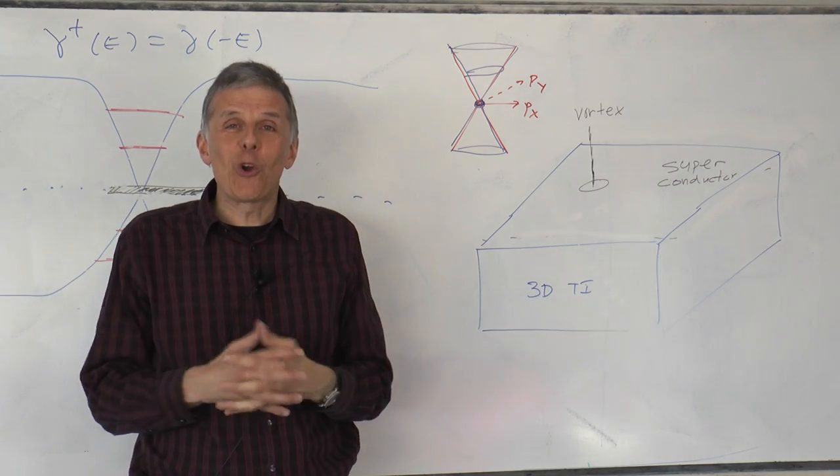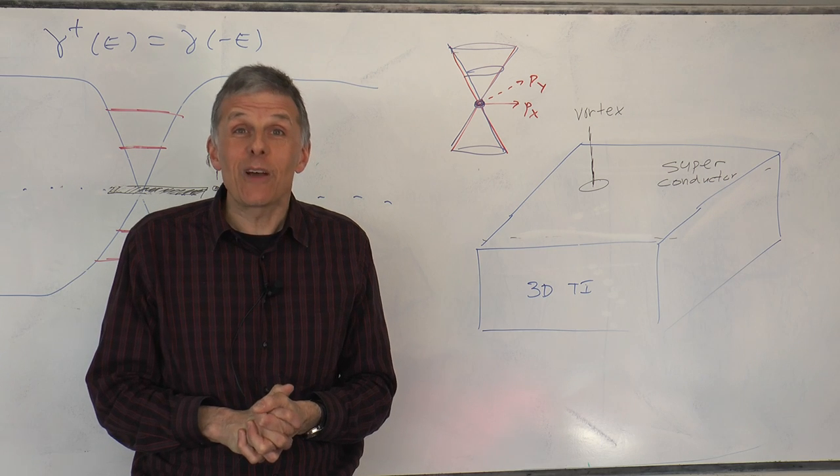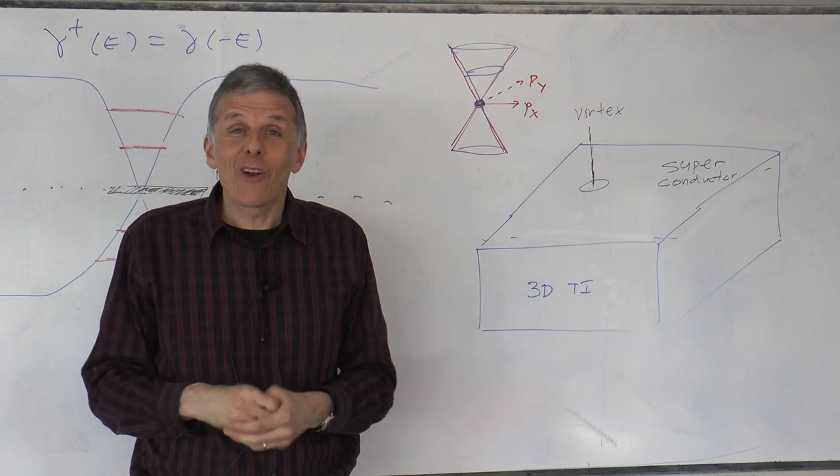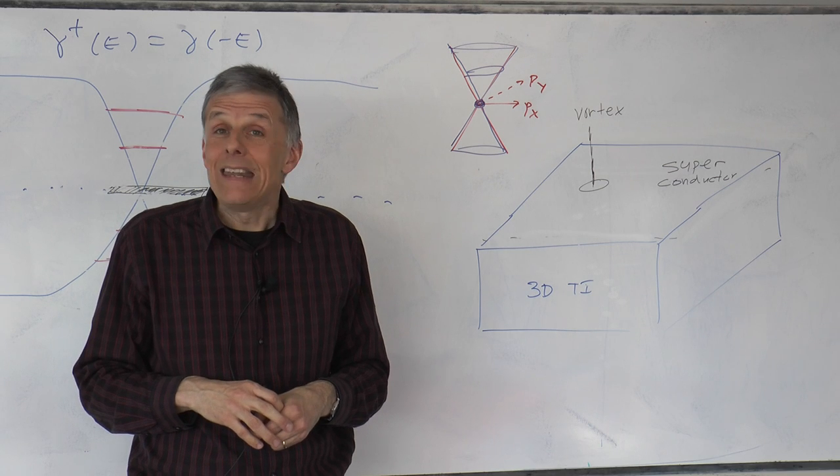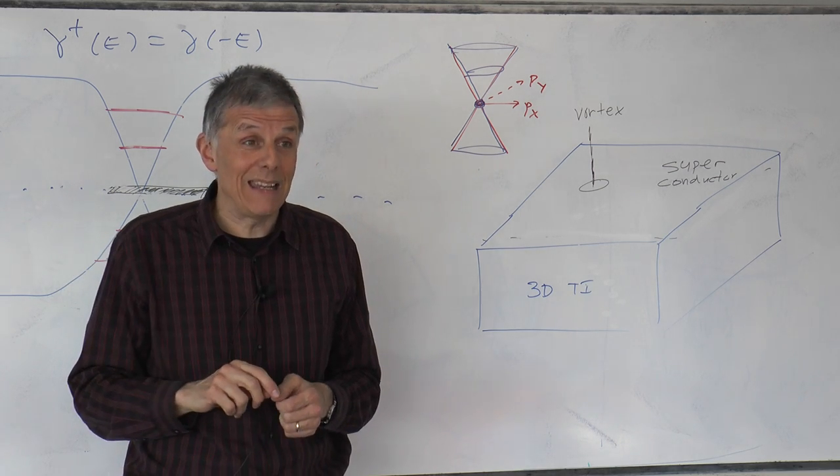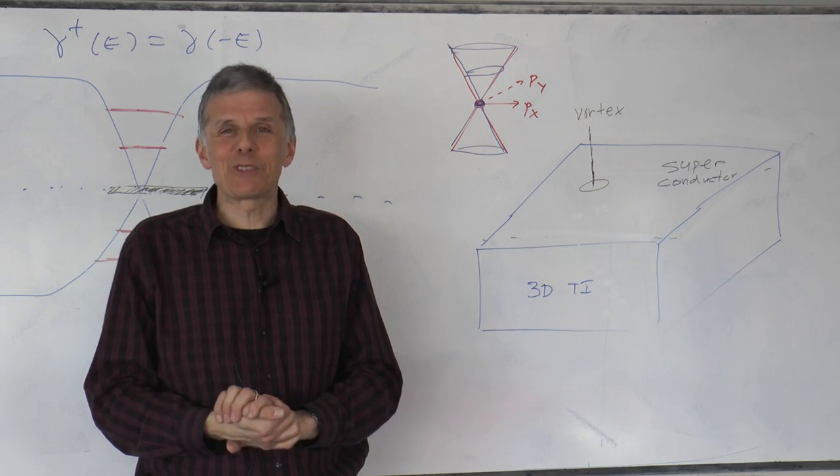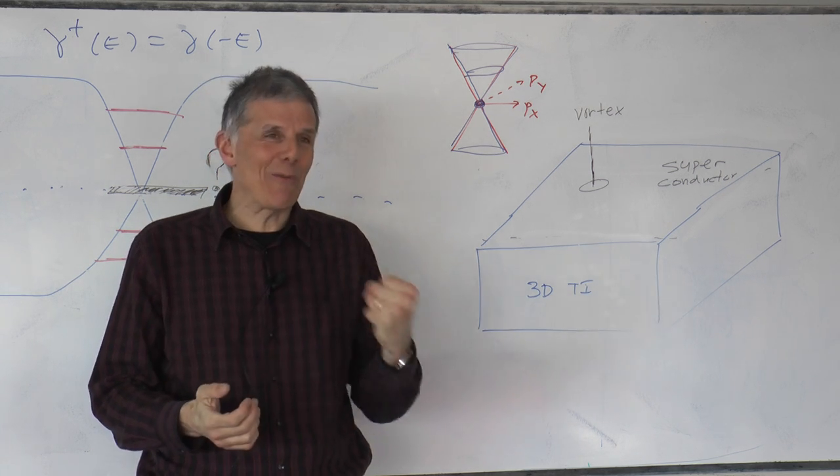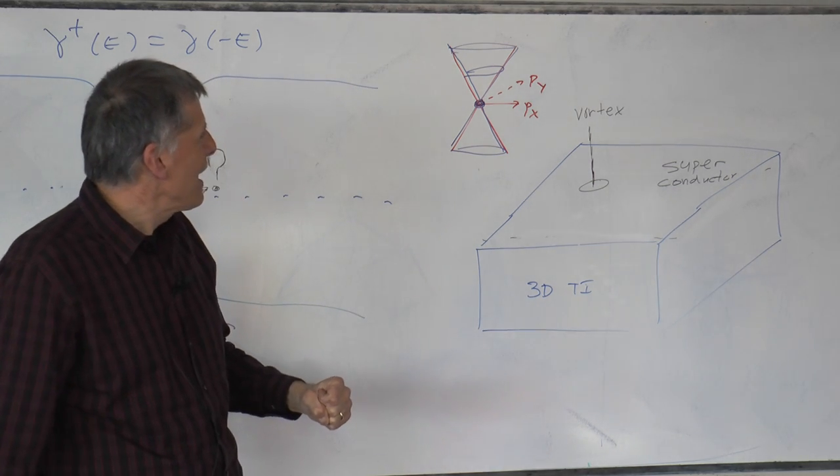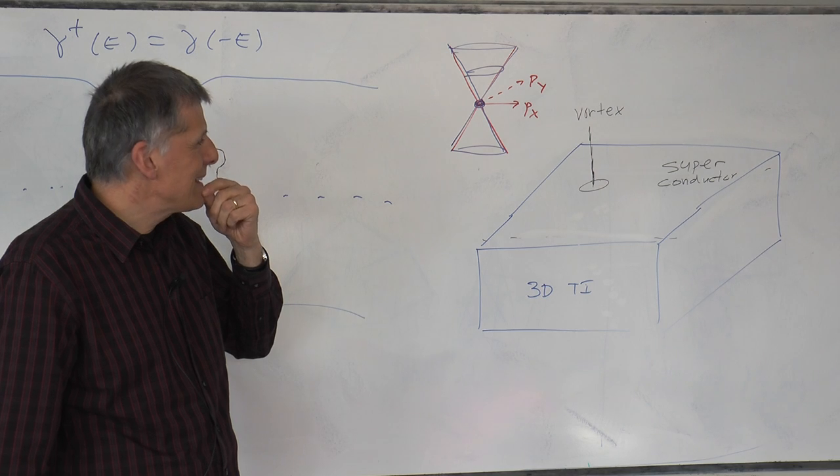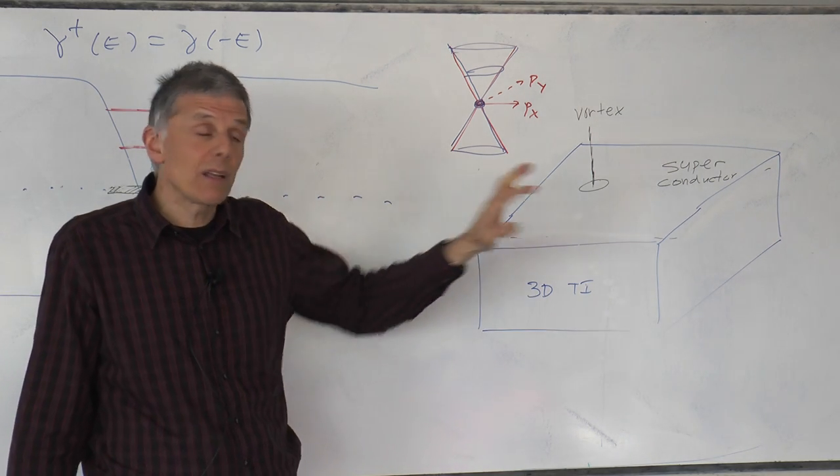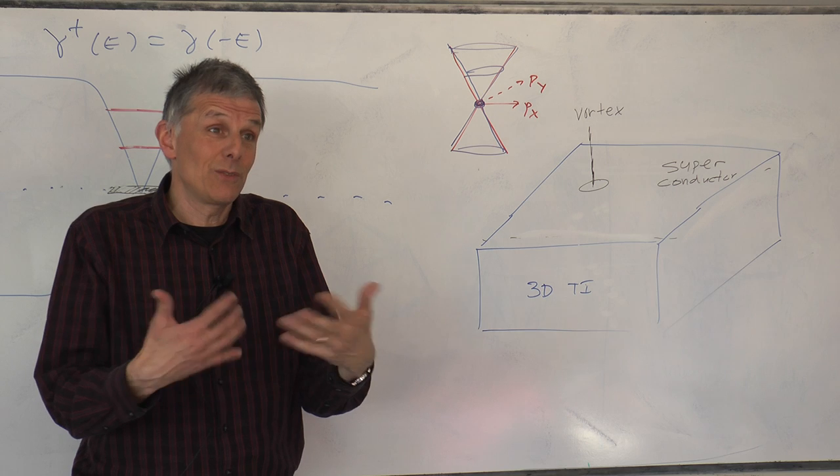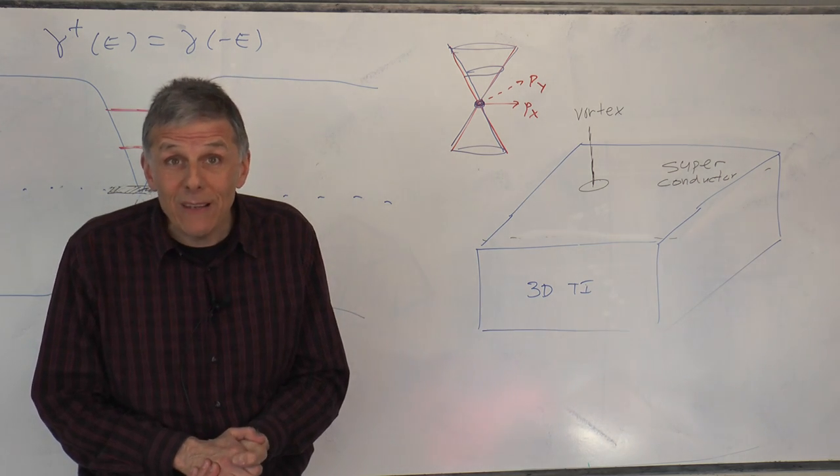This beautiful idea occurred to Liang Fu and Charlie Kane in 2008. I still remember vividly reading about it on the archive. I'd been working on graphene for like half a decade. I'd never heard of Majorana fermions. I remember looking them up in Wikipedia. It occurred to me, wow, this is such a beautiful, simple idea. I applauded these authors for having invented this idea, but I wish I would have had the same idea just a few months earlier, which I didn't. This beautiful idea has not yet been realized experimentally. This is a material science problem because three-dimensional topological insulators are much more complicated, much less tractable than graphene, and so we'll have to wait.